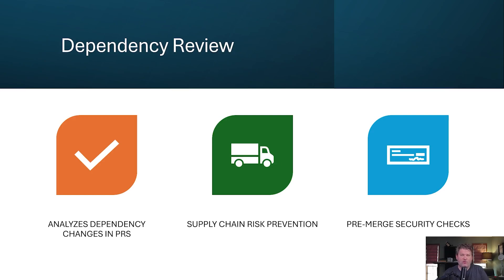The third component is dependency review, which focuses on your software supply chain security. This feature helps you understand how dependency changes in pull requests might impact your security posture. When someone creates a pull request that modifies package manifests or lock files, dependency review will tell you if any of those dependencies have known vulnerabilities, and you can use that to block the merging of the pull request. This is particularly valuable because it catches supply chain risks before they're merged into your main branch — it's much easier to address a vulnerable dependency in a pull request than to deal with it after it's already in production.